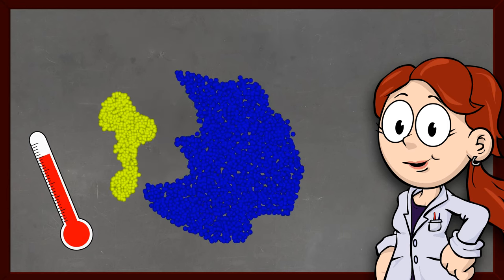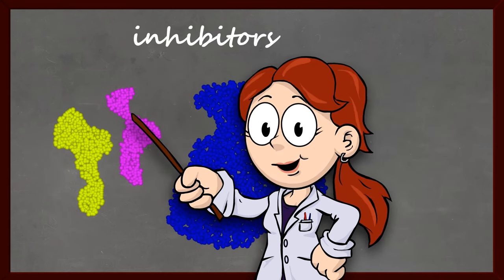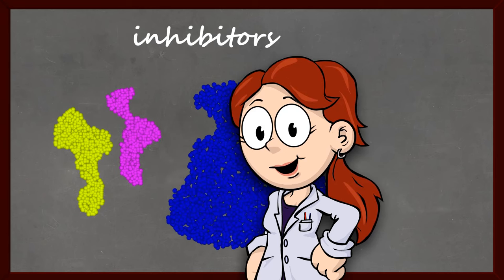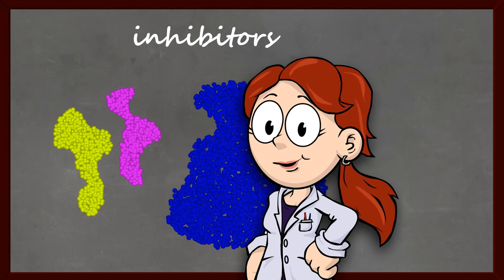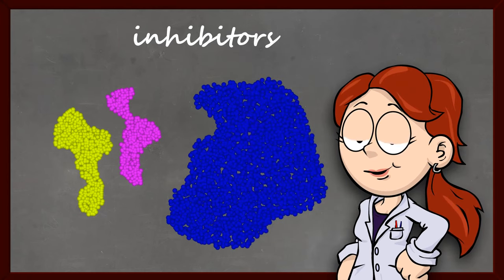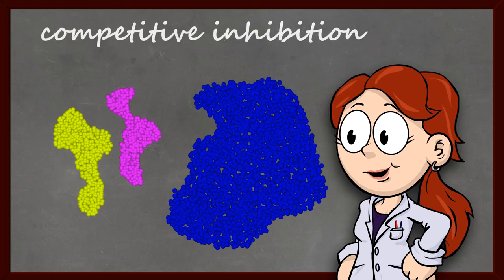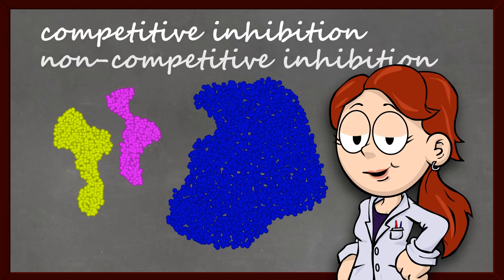Enzyme function can also be blocked by inhibitors. Enzyme inhibition is extremely important in health and medicine, since most medications that you can buy from a pharmacy, or that are prescribed by your doctor, function as inhibitors of enzymes in our bodies. Enzyme inhibition falls into two broad categories, competitive inhibition and non-competitive inhibition.